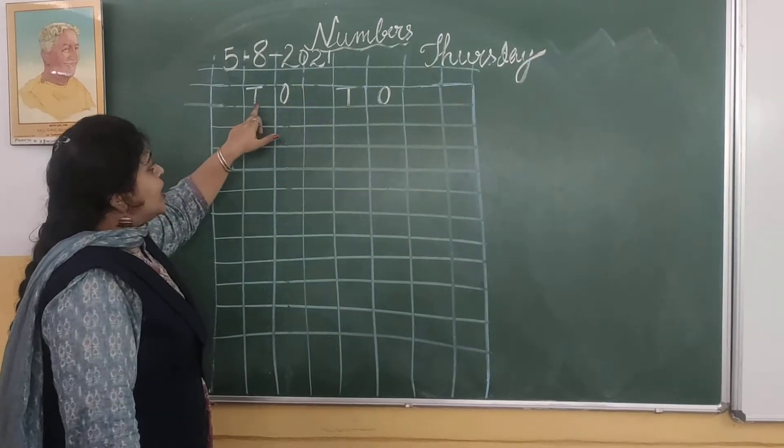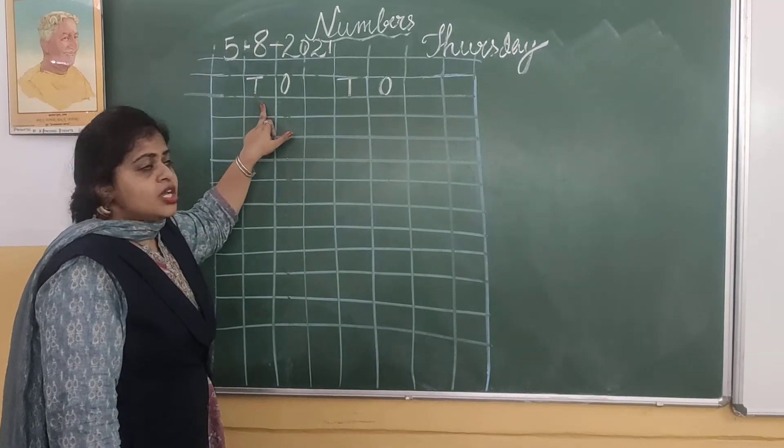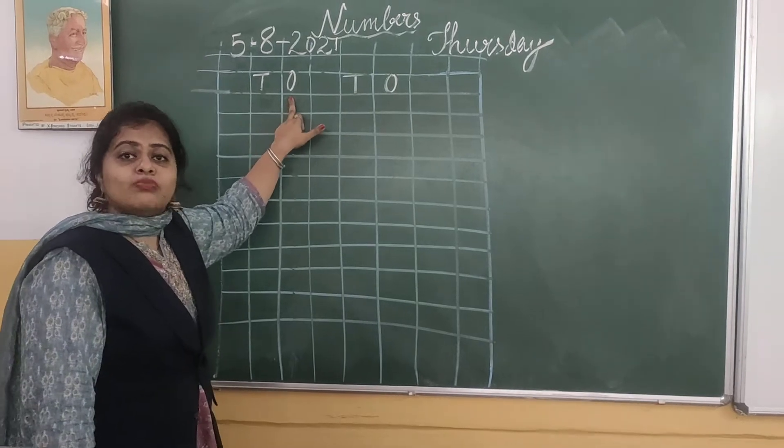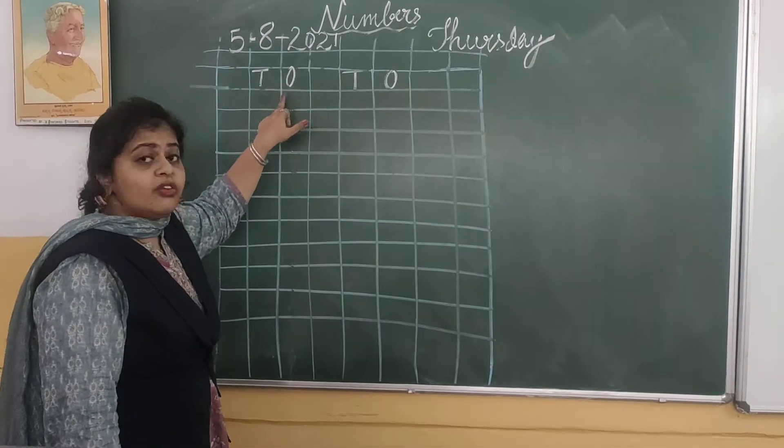Before going to numbers, we should understand place values. T is for tens and O is for ones. Any number from 0 to 9 will come under the ones place.